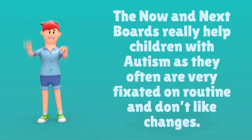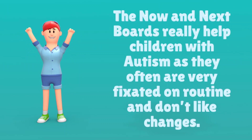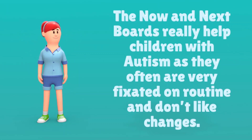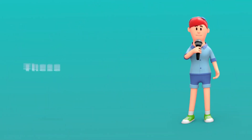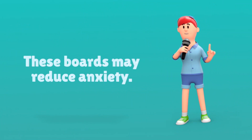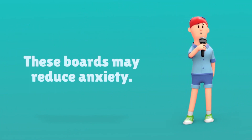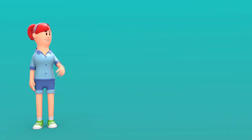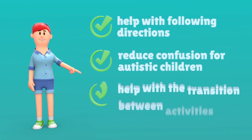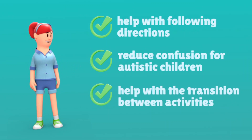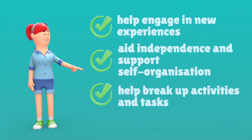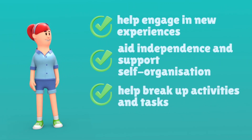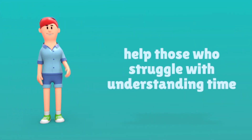Now and next boards really help children with autism as they are often very fixated on routine and don't like changes. With the board, they know what to expect next, which can reduce anxiety. Autistic people rely on predictability — not knowing what comes next causes them stress and fear. These boards can help with following directions, reduce confusion, help with transitions between activities, aid independence, support self-organization, and help those who struggle with understanding time.